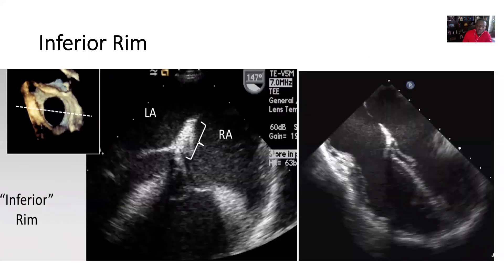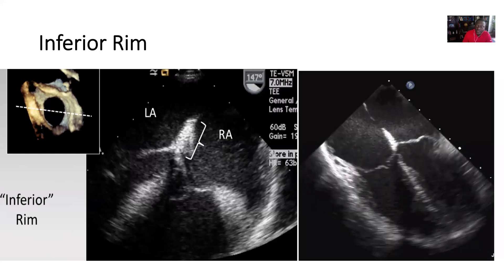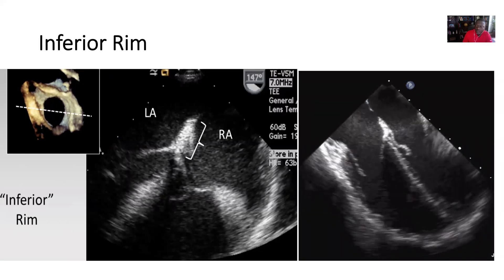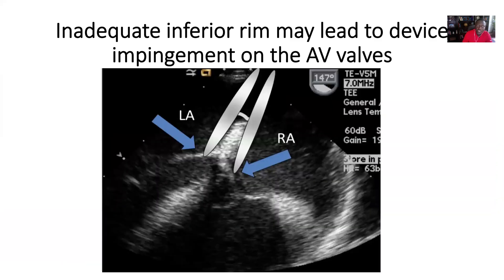The inferior rims can sometimes be absent, and when this is absent they can be compromised if you do put the device on the AV valves. Here we see a cartoon showing potential placement of a device where the device really rests on the inferior rim, and if you have a deficient inferior rim then the device may impinge on the AV valves and cause more problems.